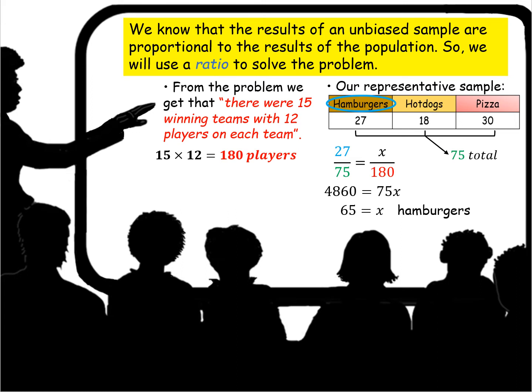Well, use cross multiplication: 27 times 180 is 4,860 and 75 times x is 75x, and then you divide both sides by 75 and you find that for the 180 you would need 65 hamburgers based on the preference of the sample data.